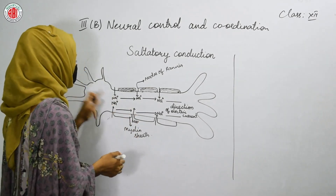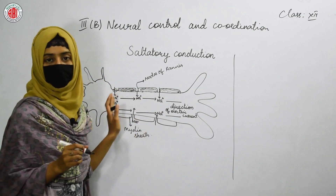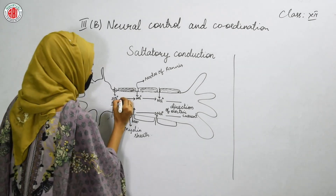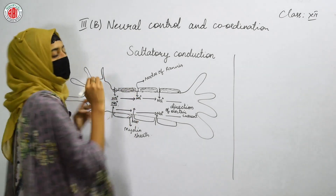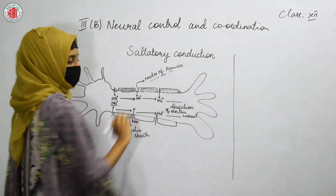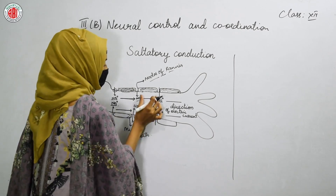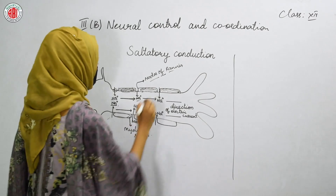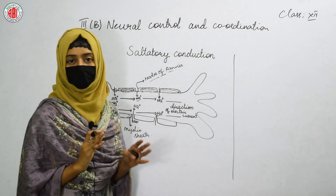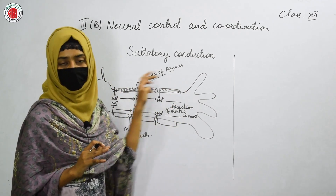The depolarization of the cell occurs firstly at the first node. The sodium ions enter into the cell — that condition is called depolarization. Then there will be no depolarization in the region covered by the myelin sheath, because the sodium ions would not enter at that region. Then again, a node of Ranvier is present where the sodium ions enter into the cell and depolarization occurs. Another gap is present due to the myelin sheath, then another node of Ranvier where sodium enters and depolarization can occur. This is how saltatory conduction occurs, showing the direction of electric current — the movement of sodium ions at different nodes of Ranvier present in the myelin sheath.